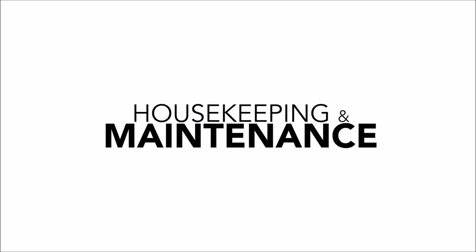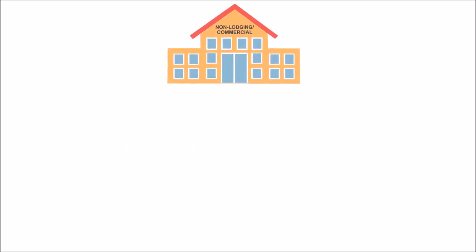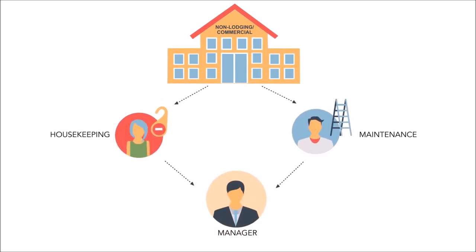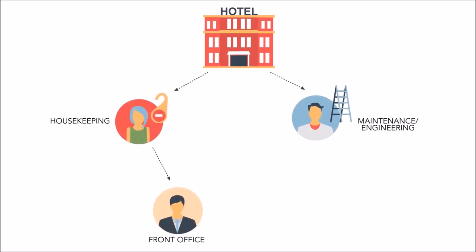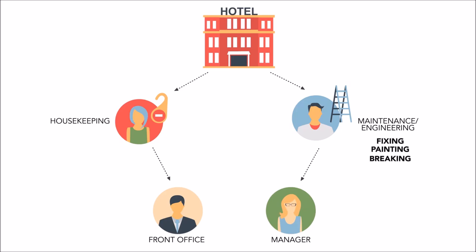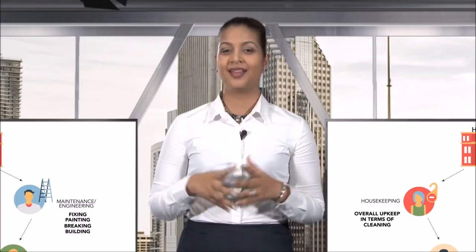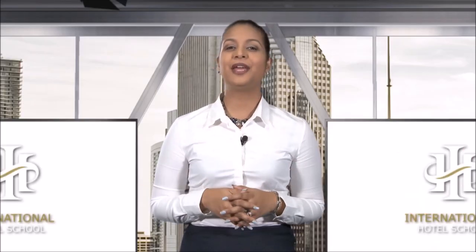In non-lodging commercial buildings, housekeeping and maintenance would report to the same department manager, since these two departments share common goals and objectives and foster a close working relationship. In mid-size and large hotels, housekeeping reports directly to front office, whilst maintenance — or engineering, as it is also referred to — functions as a division on its own. The responsibility of the maintenance department is the upkeep of the property in terms of the physical structure: fixing, painting, breaking, and building. Housekeeping primarily focuses on the overall property upkeep in terms of cleaning, and both departments work closely together in preparing clean rooms for front office.